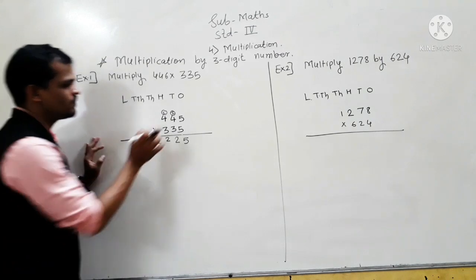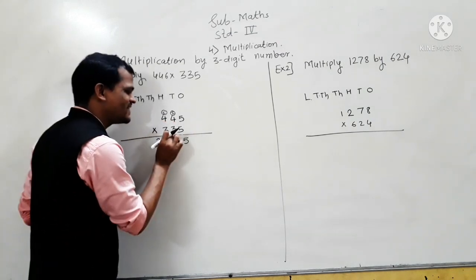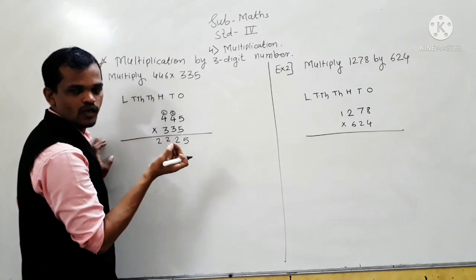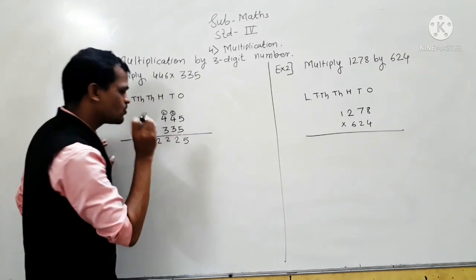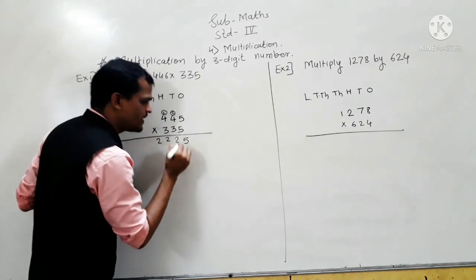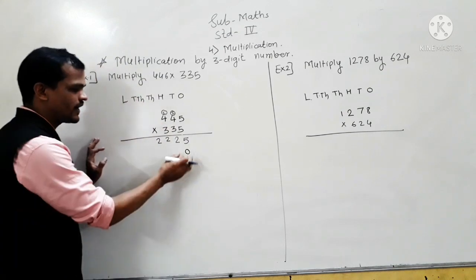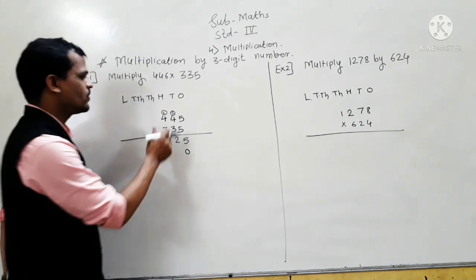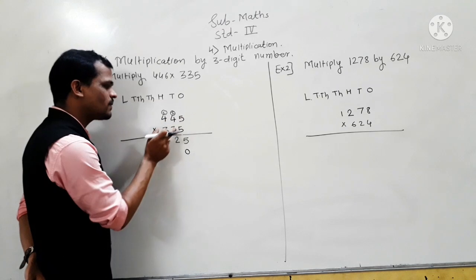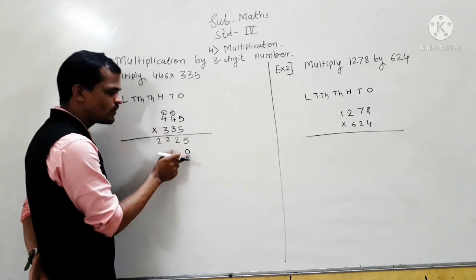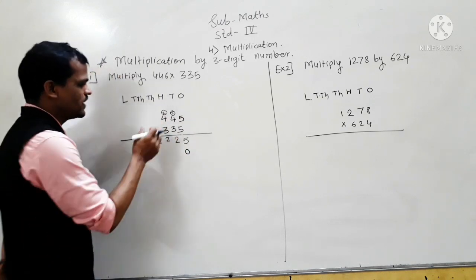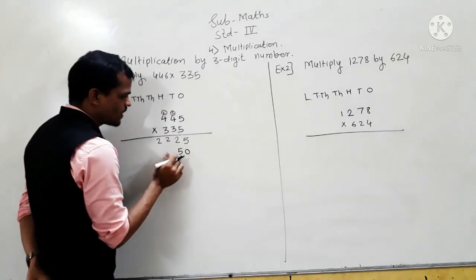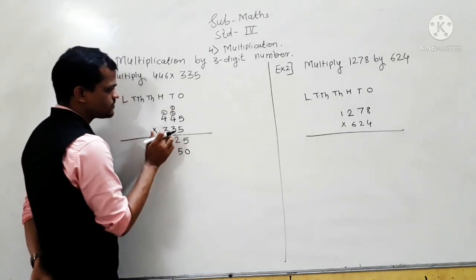Next step: multiply 425 by the tens digit, which is 3 tens meaning 30. You have to write 0 at the ones place because we are multiplying the number by the tens place digit. So we write 0 here. Let's start: 3 fives are 15 — write 5 here and carry 1.